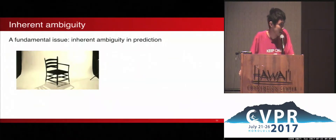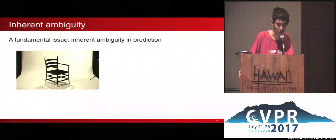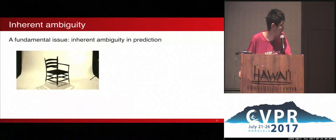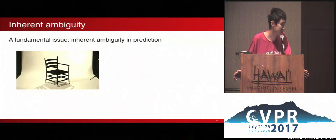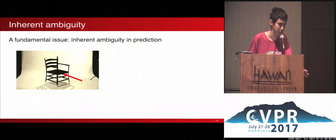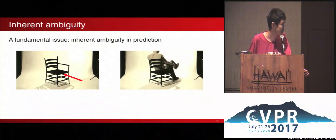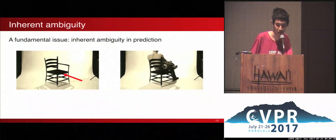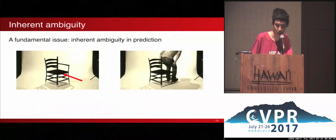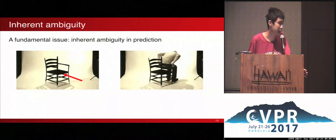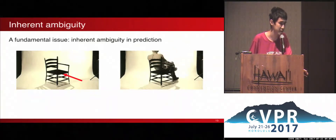There is an inherent ambiguity in the problem. Take a generic example — can you tell what this shape is, or which side it is facing? Maybe you have an answer now, but there are also other possibilities. And during the training of the network, this kind of uncertainty should always affect its behavior.